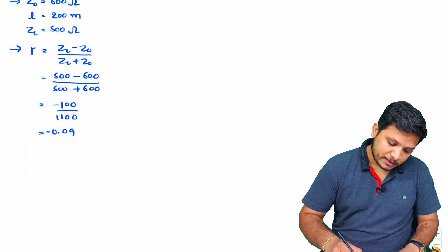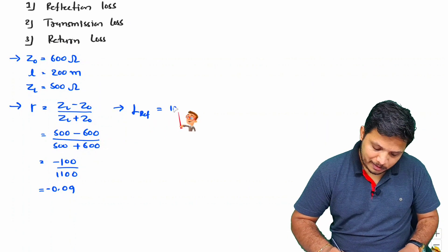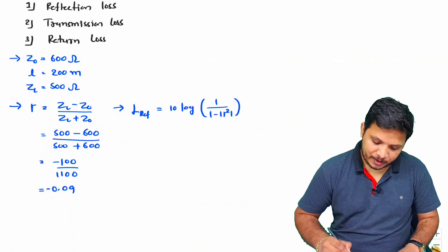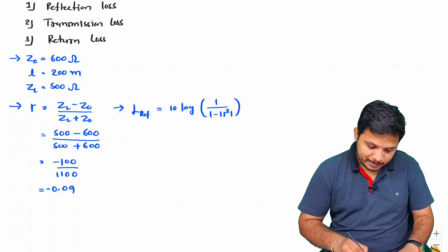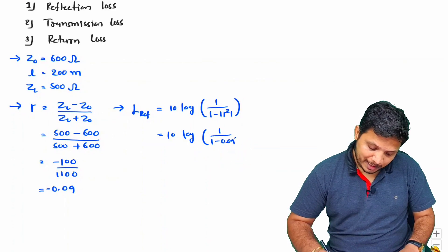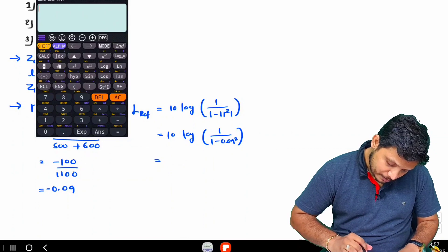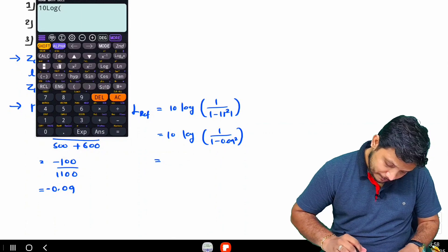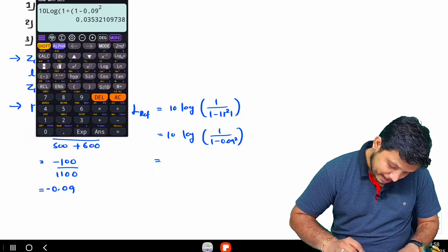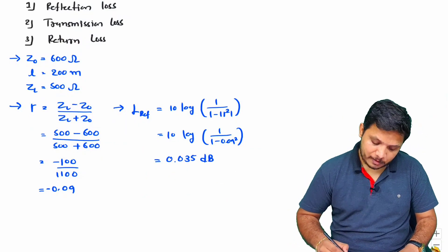Using ρ = 0.09 in the reflection loss formula: reflection loss = 10 log(1 / (1 - 0.09²)). Calculating this gives 0.035 dB. So the reflection loss is 0.035 dB.